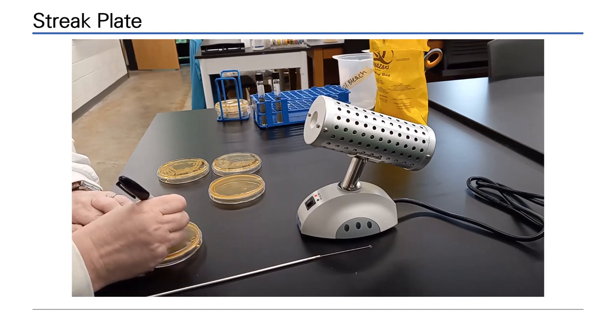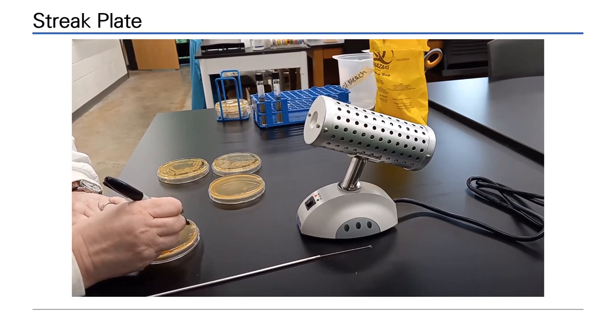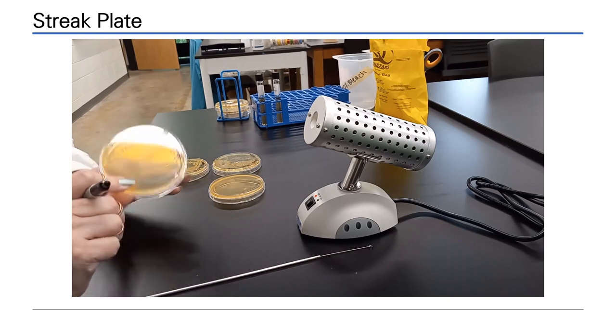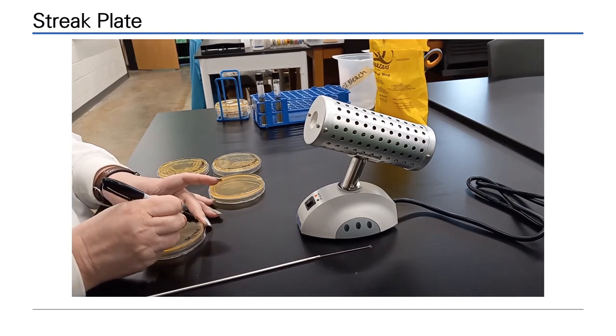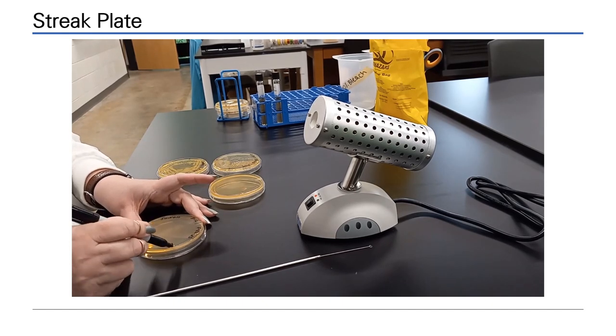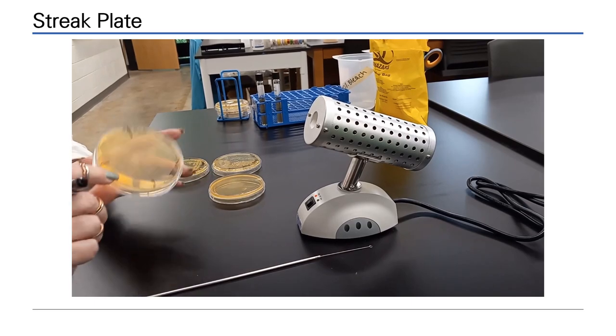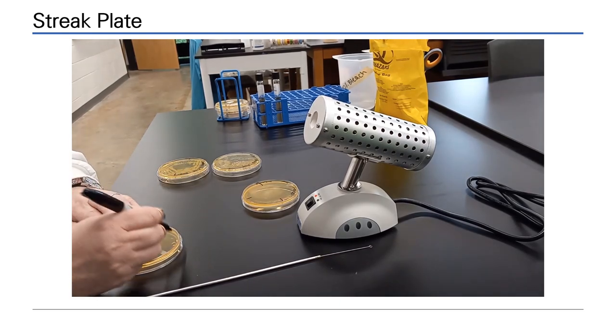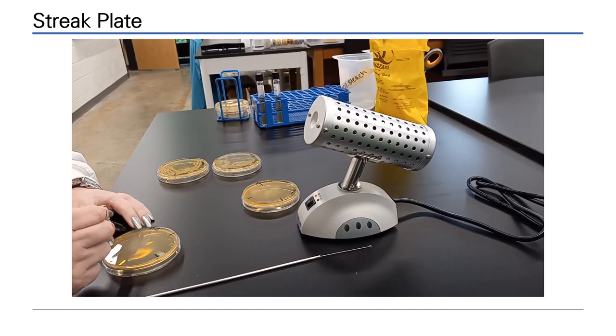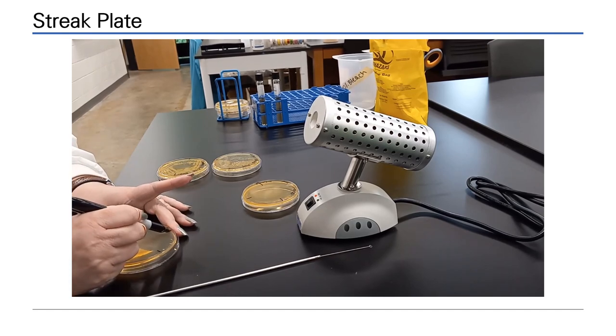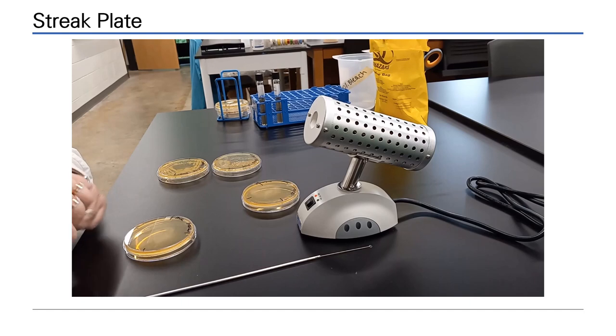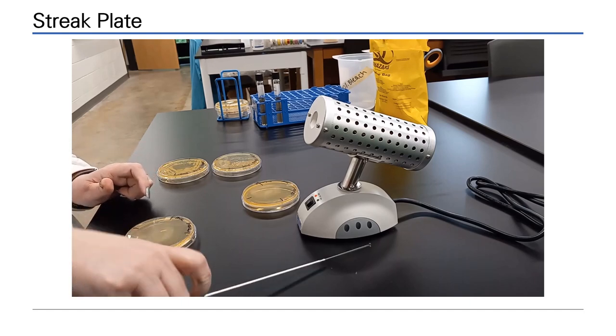Here we will demonstrate the quadrant streak plate method. Two organisms will be streaked, E. coli and Staphylococcus aureus. The quadrant streak plate method is used to dilute out an organism to a level where only individual cells are deposited on the agar. These will grow up into isolated colony forming units after incubation. You will notice that the quadrants are marked on the bottom of the agar plate. This will make keeping track of the quadrant streak easier when you first learn the technique.